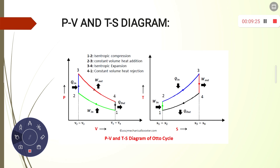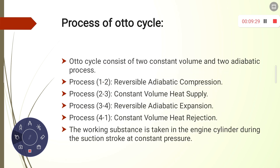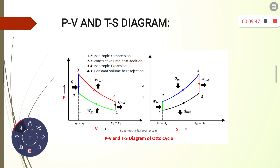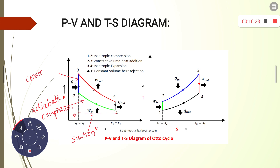Let's learn about the PV diagram and the TS diagram. From zero to one, suction takes place — the air-fuel mixture is admitted into the cylinder at constant pressure. Then the process from one to two is compression; the air is compressed by the piston to the minimum volume with all valves closed — this is also known as adiabatic compression. The process from two to three is known as the constant volume process; during this process we supply heat at constant volume.